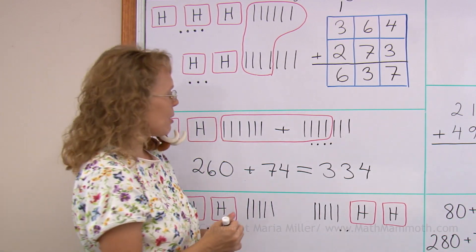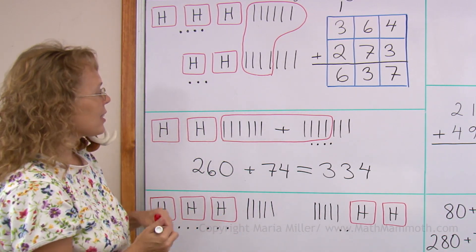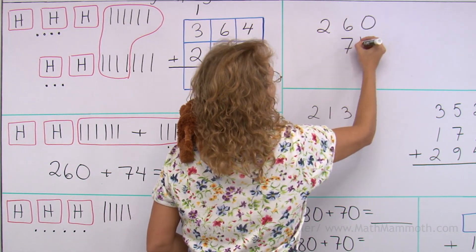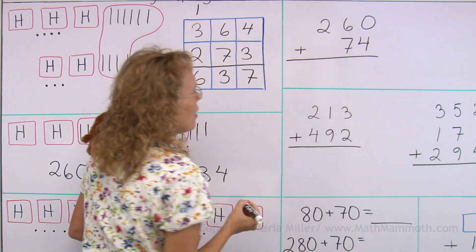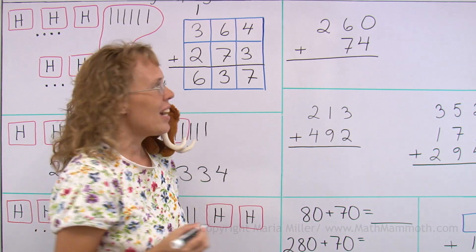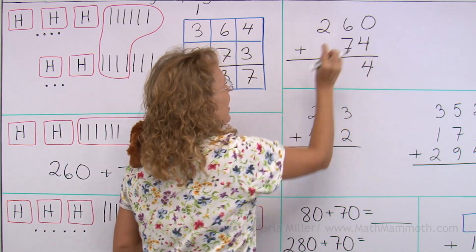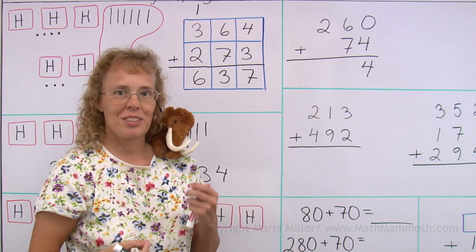And now I'm gonna write those numbers under each other. Two hundred and sixty, seventy, four. Over here we add the ones first, four. Then the tens, six plus seven equals thirteen.